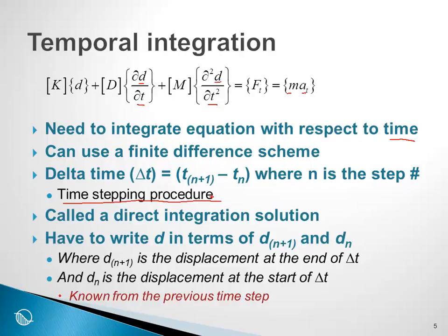In numerical methods, this is called a direct integration scheme. We write displacement d in terms of the displacement at the end of the time step and the beginning of the time step. The displacement at the beginning of the time step is known from the previous time step. So as we march forward in time, we always know the conditions at the start of a delta t and compute the conditions at the end. Consequently, you as the user need to specify a time stepping procedure, which we will show later.